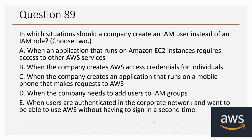Question number 89: In which situations should a company create an IAM user instead of an IAM role? Choose two. Options: A. When an application on Amazon EC2 instances requires access to other AWS services. B. When the company creates AWS access credentials for individuals. C. When the company creates an application on a mobile phone that makes requests to AWS. D. When the company needs to add users to IAM groups. E. When users authenticated in the corporate network want to use AWS without signing in a second time. The correct options are B and D.